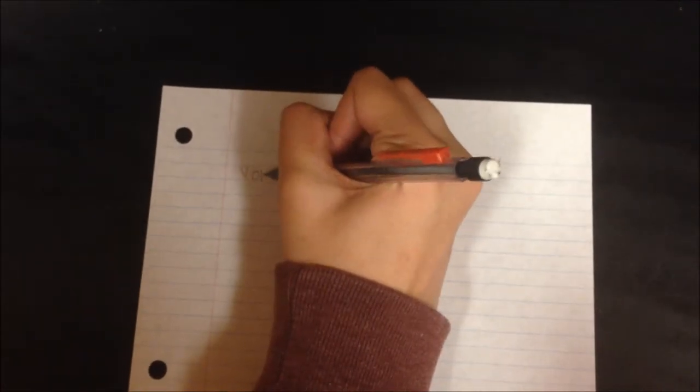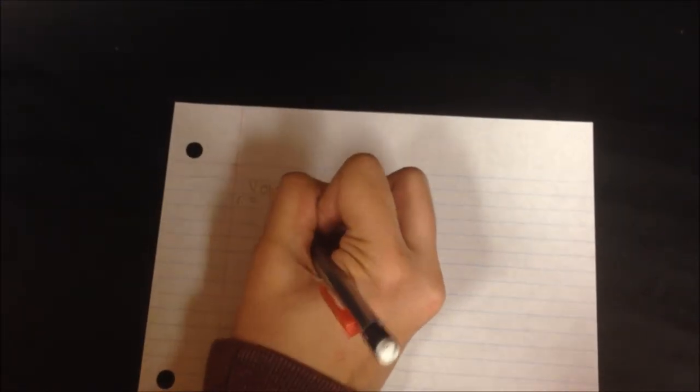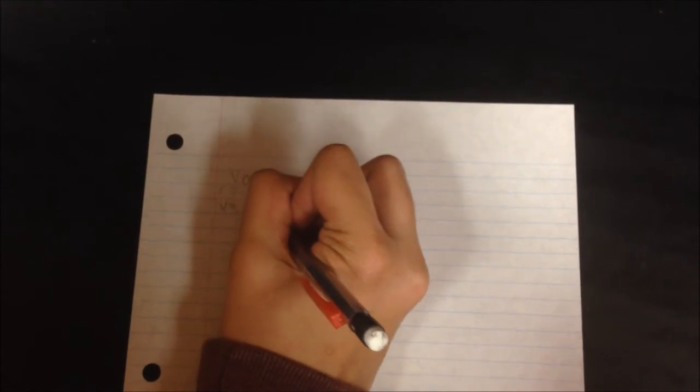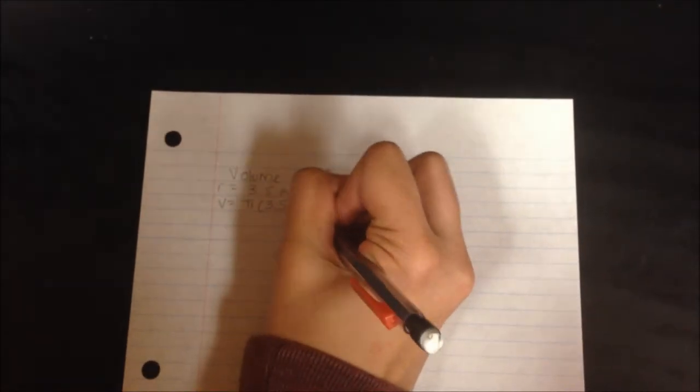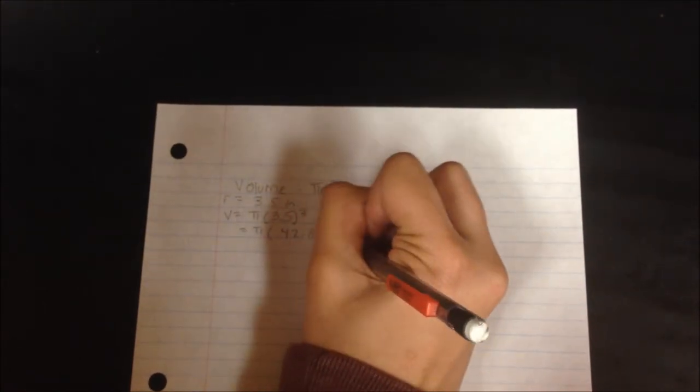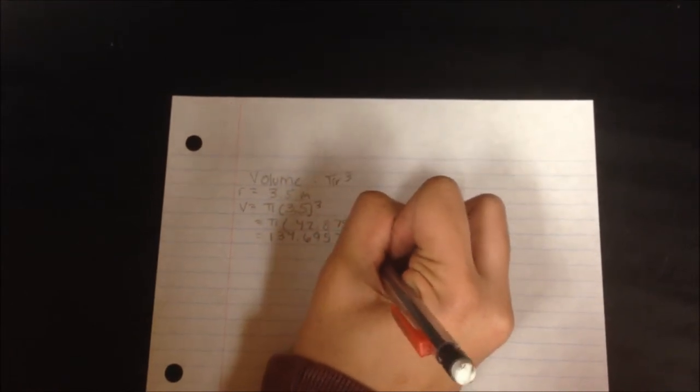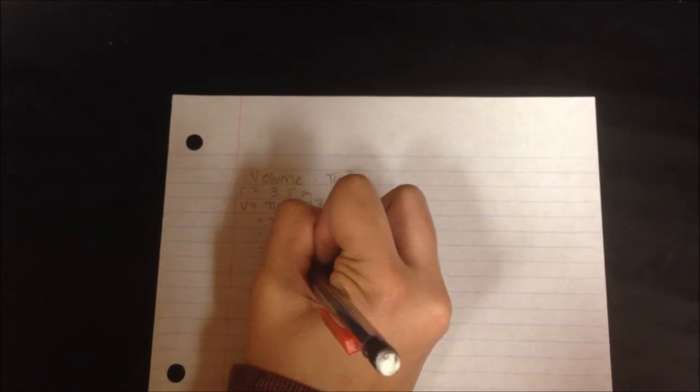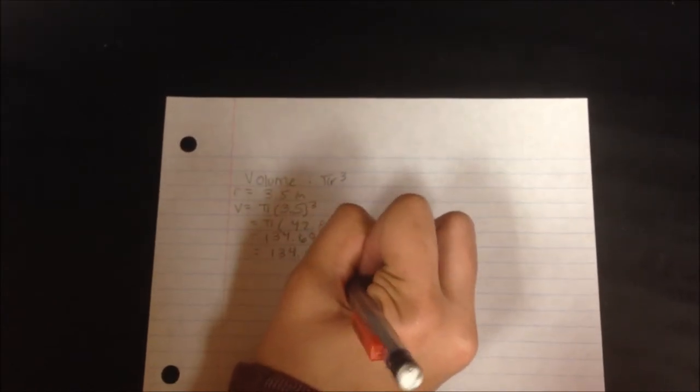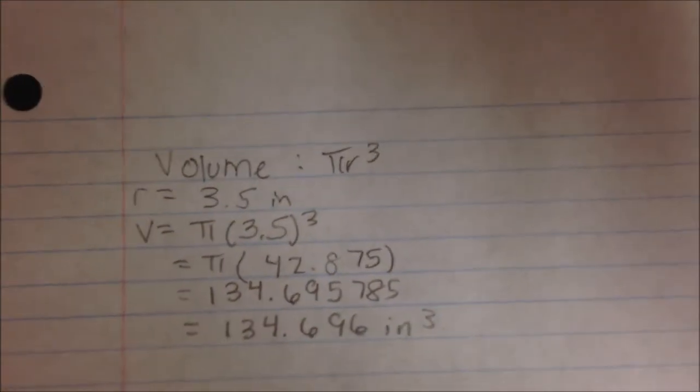The volume of a bowl is pi r cubed. Our radius was 3.5 inches. When you plug it in, you'll get pi times 3.5 cubed, and 3.5 cubed is 42.875. When you multiply that by pi, you'll get 134.695785, which will be rounded to about 134.696 inches cubed.